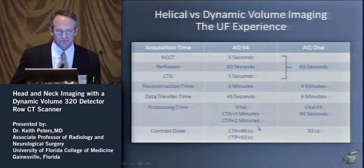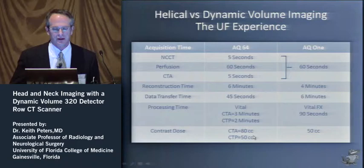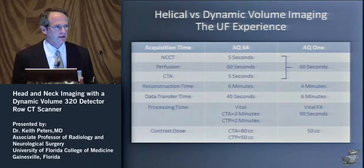Everything is really pretty equivalent overall, depending on the technologist and the interpreting radiologist. Regarding contrast dose, with the AQ1 we only need a single dose — 50 cc — and that covers both perfusion and angio. On a regular 64-slice scan done helically, that single dose only gets the perfusion, and we still need another contrast injection for the angio. Moving to the AQ1 gives us a decrease in overall contrast dose and a reduction in the number of injections, improving the overall safety profile for the patient.